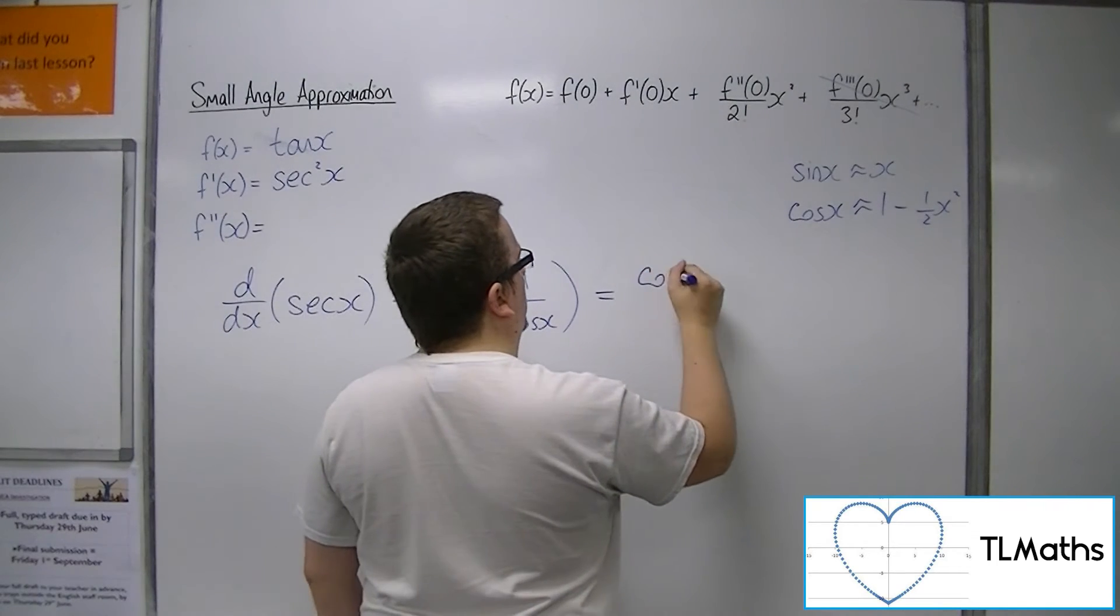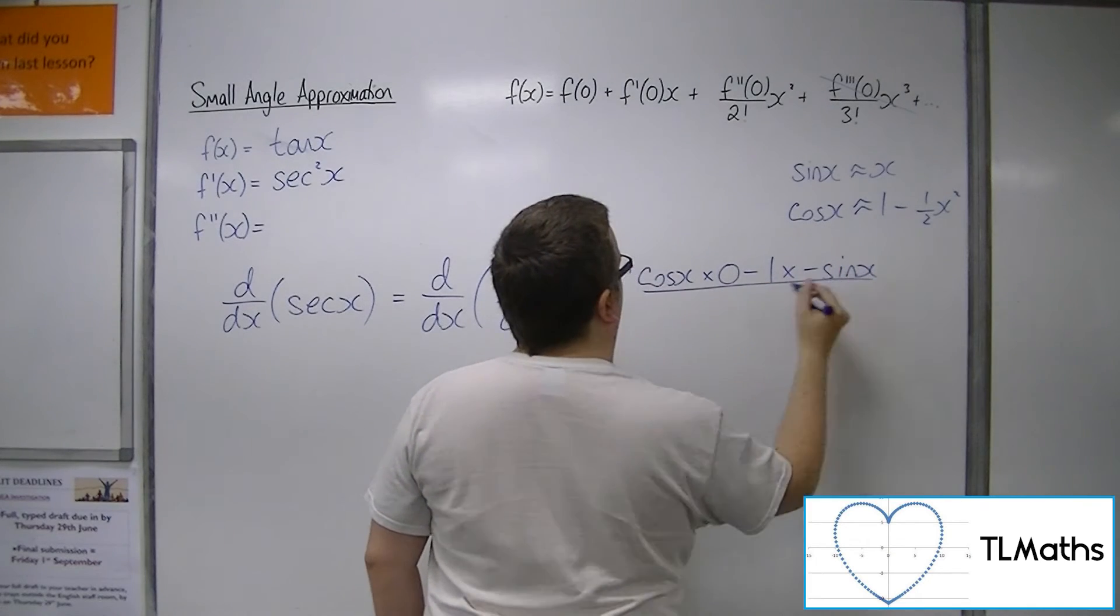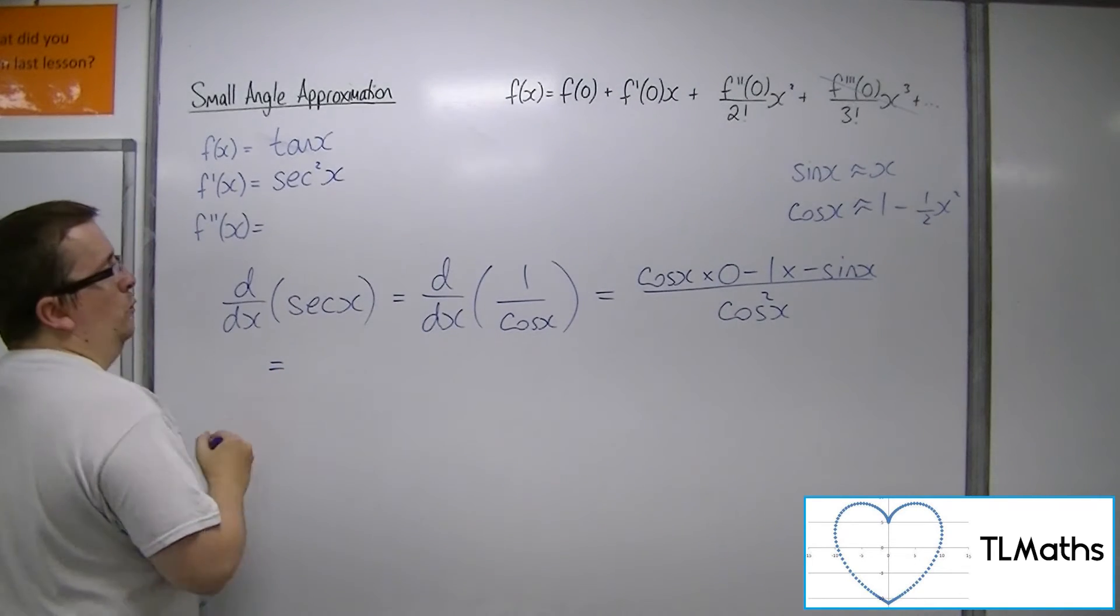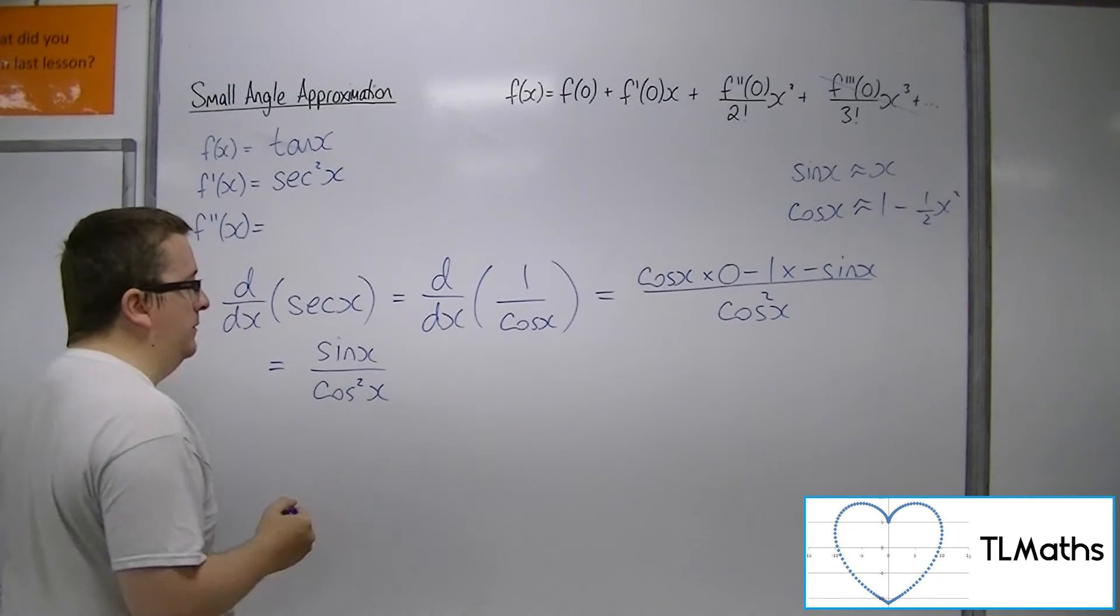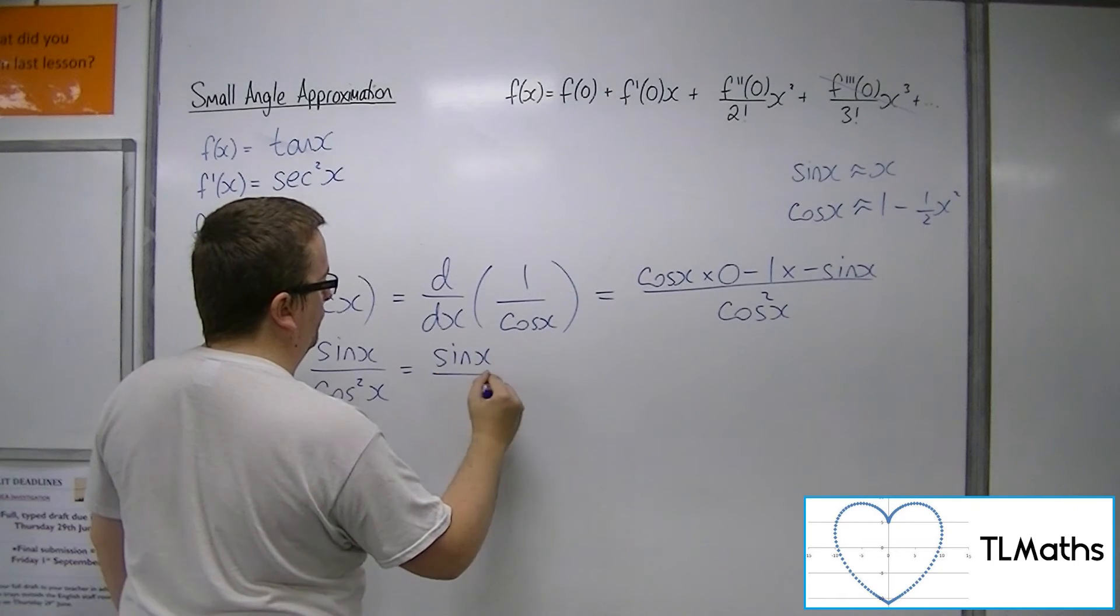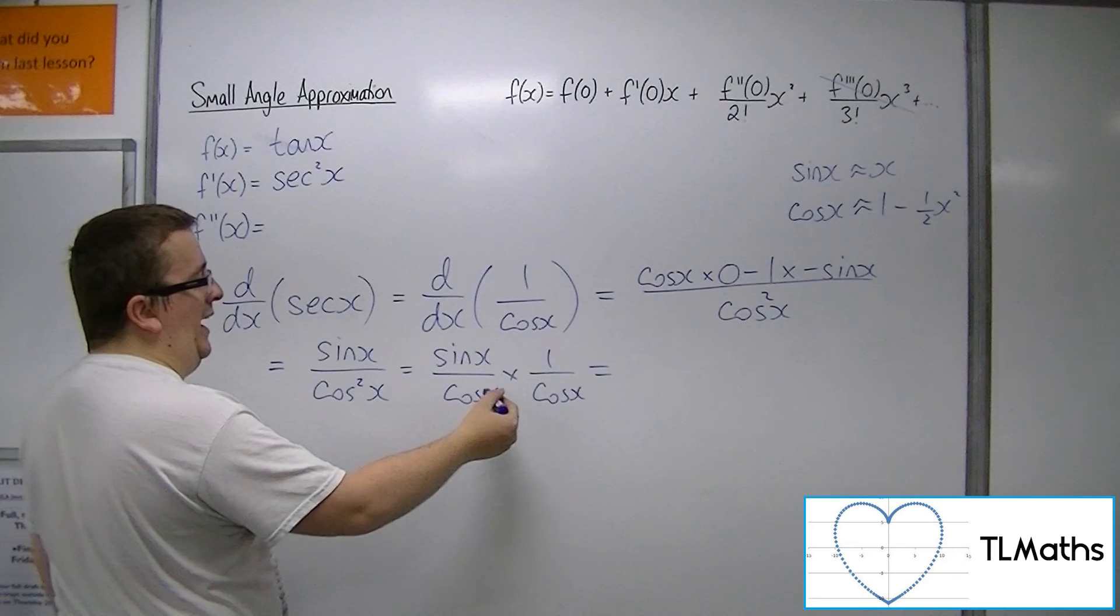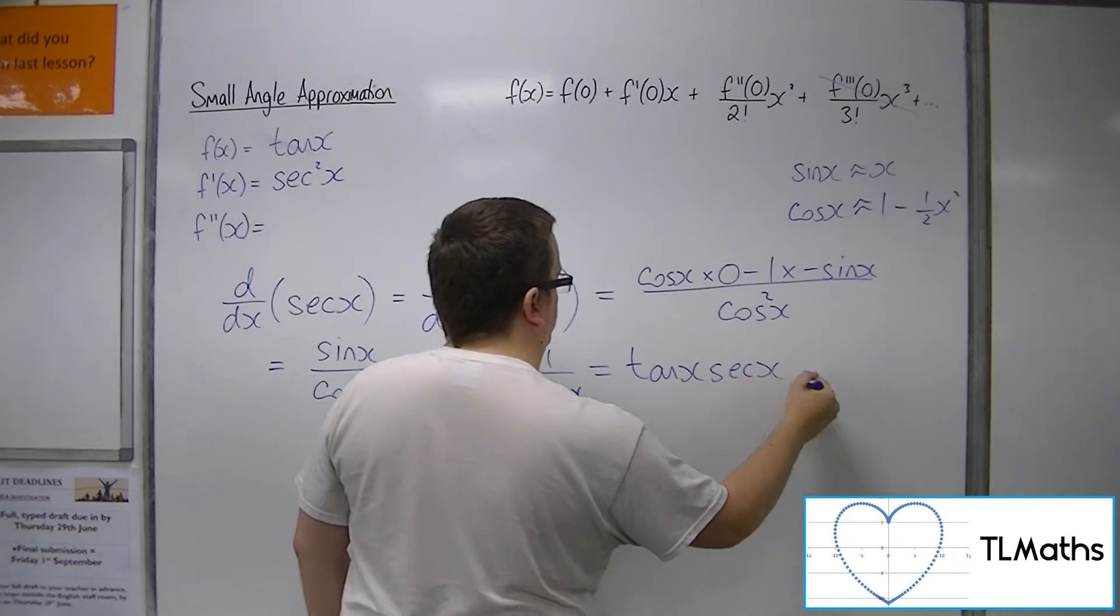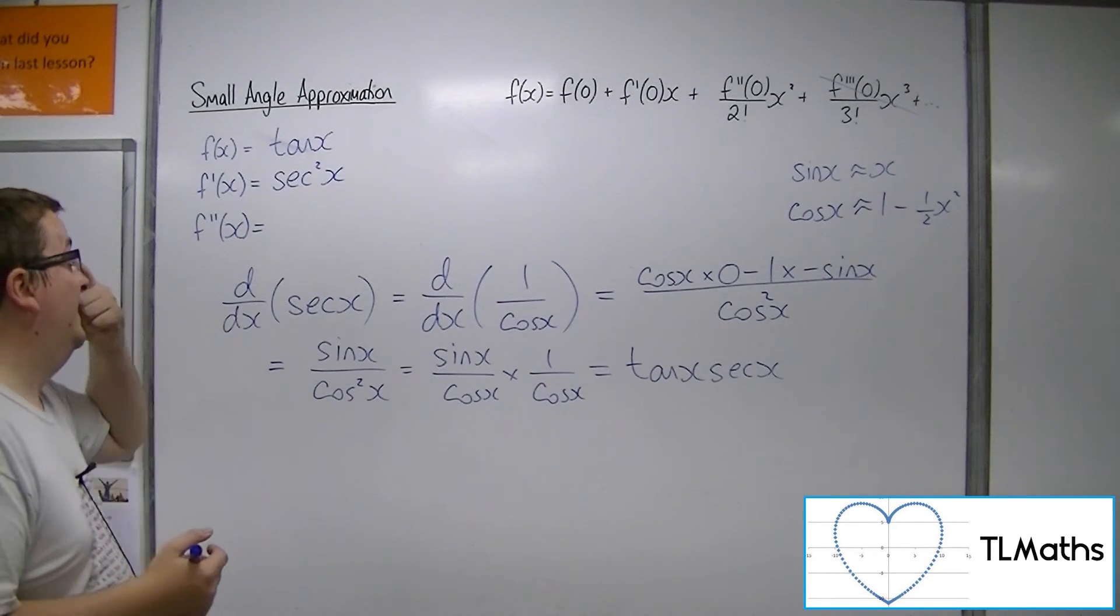So, what have we got there? We've got sin x over cos squared x. So, that's the same as sin over cos times 1 over cos, which is the same as tan times sec. So, we know that sec x differentiates to tan x sec x.